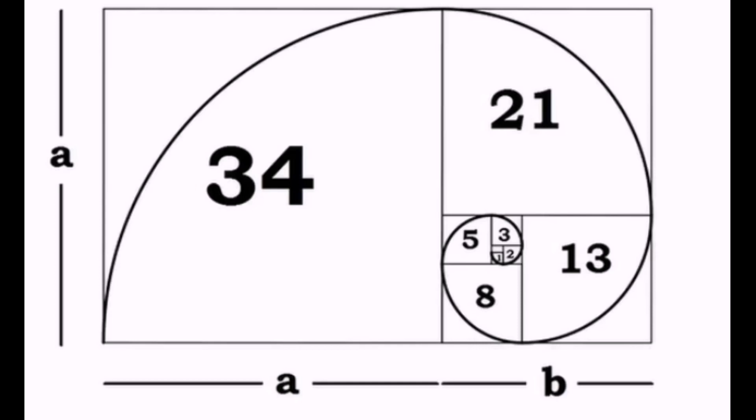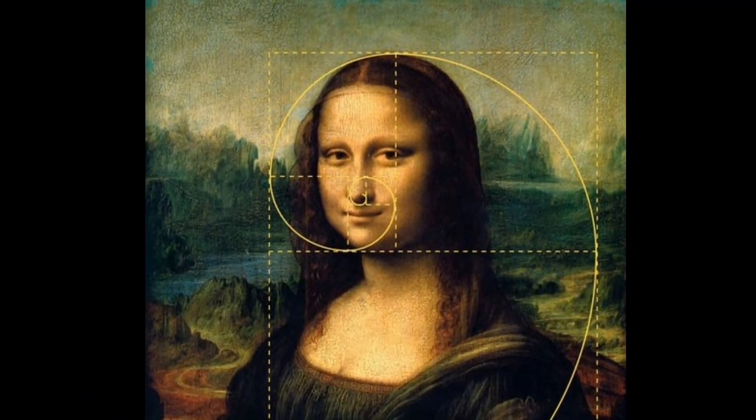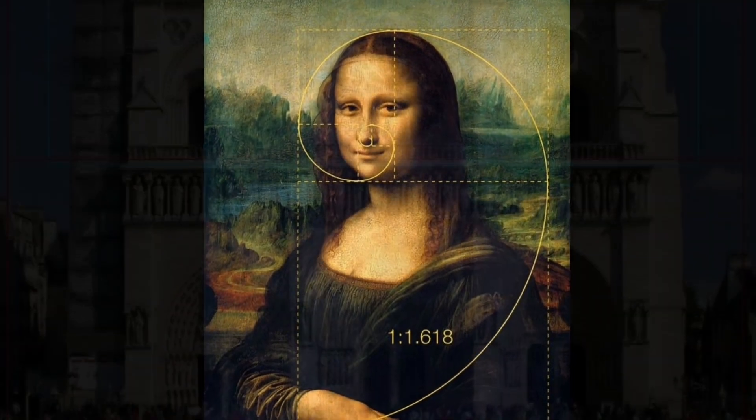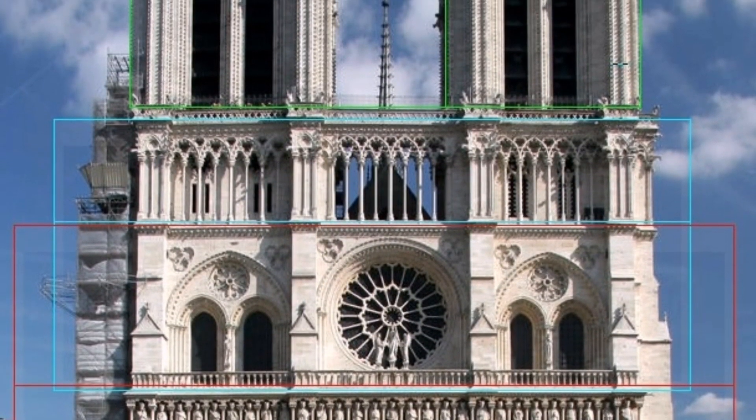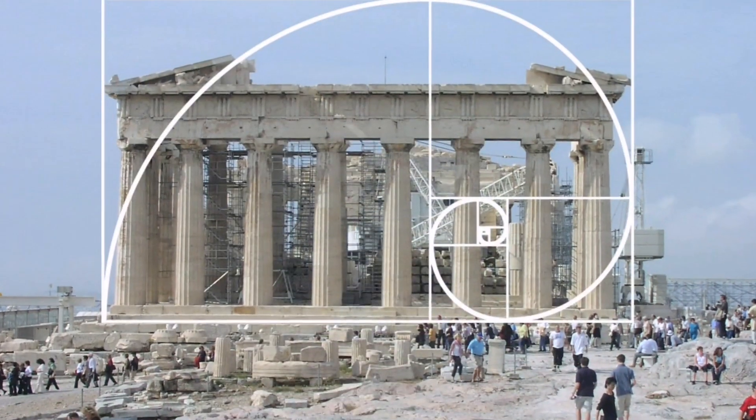Shapes and figures that bear this proportion are generally considered to be aesthetically pleasing. As such, this ratio is visible in many works of art and architecture, such as in the Mona Lisa, Notre Dame Cathedral, and the Parthenon.